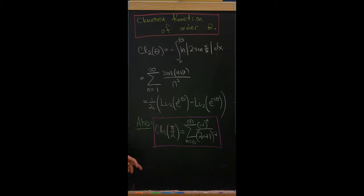Now there aren't many nice values of the Clausen function but one of them is Cl2 of pi over 2 which turns into the alternating sum of the squares of the odd numbers.